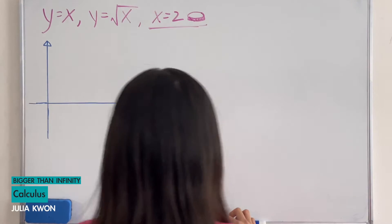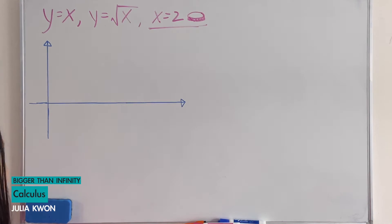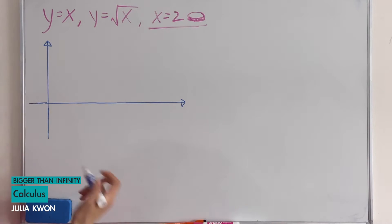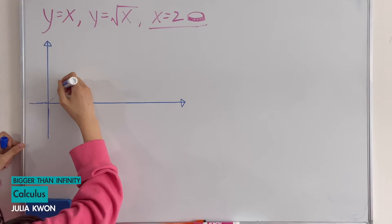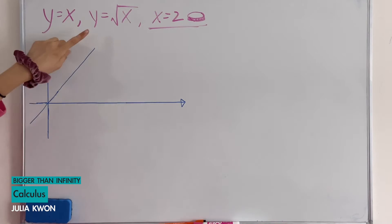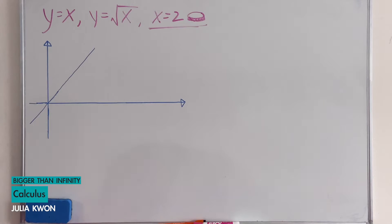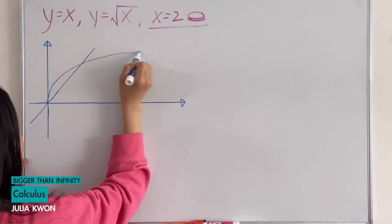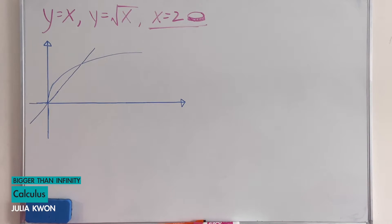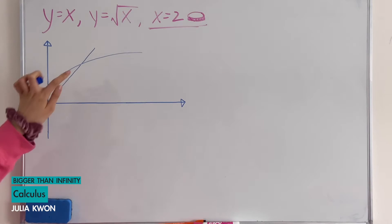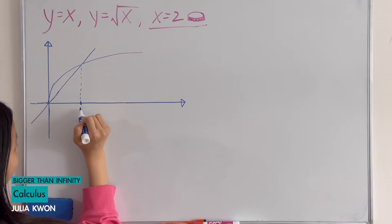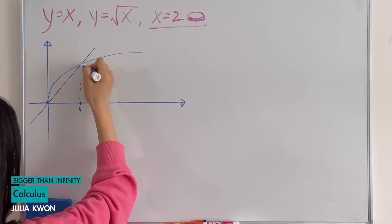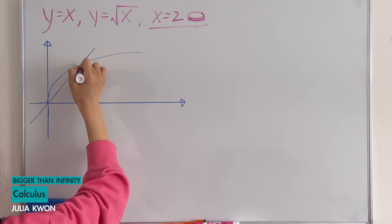First, I'm going to graph what this problem looks like. y equals x looks like this, and y equals square root of x looks like this. The point where they intersect is at x equals 1, and that is also at y equals 1.